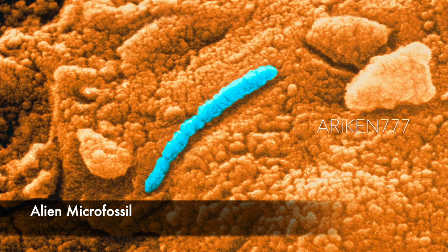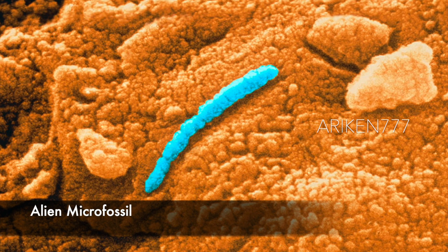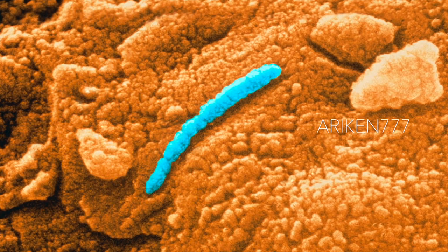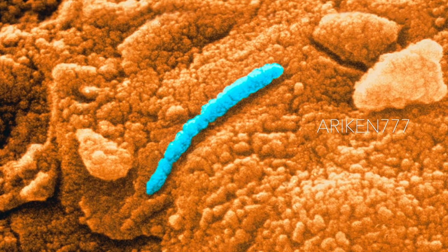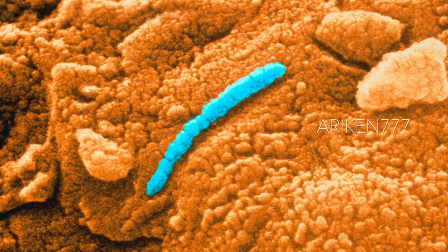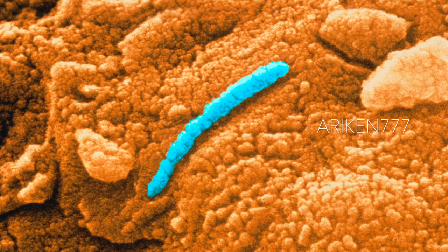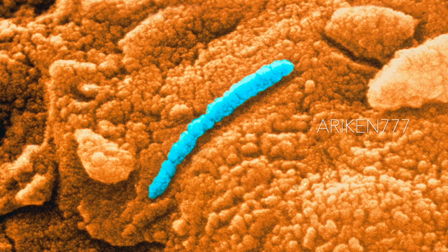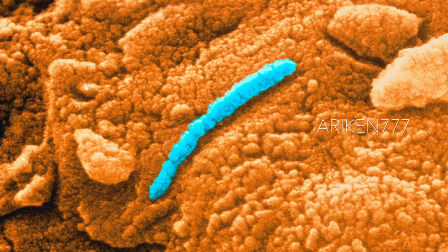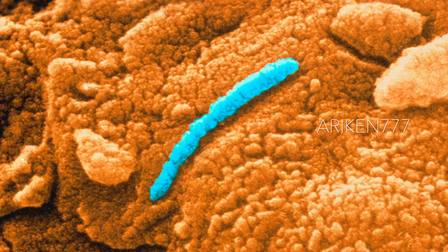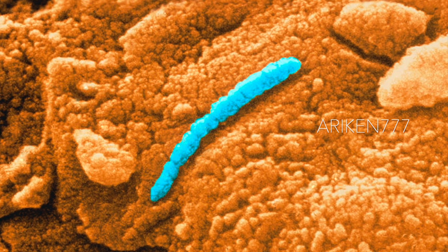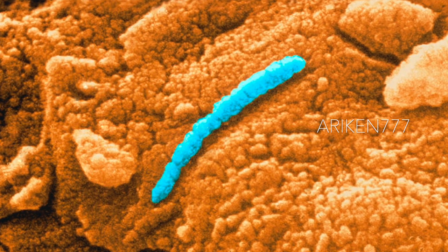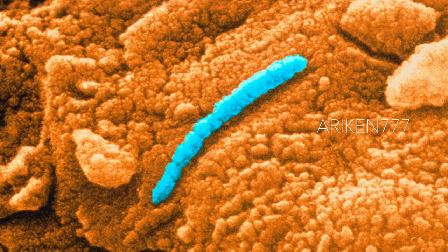Is this the evidence for life on Mars? This tube-like structure on a meteorite originated from Mars. Structures such as this have been interpreted as possibly being microfossils of primitive bacteria-like organisms which may have lived on Mars more than 3.6 billion years ago. The meteorite, called ALH 84001, was discovered in Antarctica in 1984 and has since been studied at NASA's Johnson Space Center and at Stanford University.